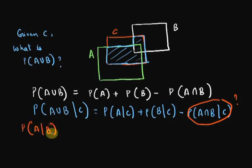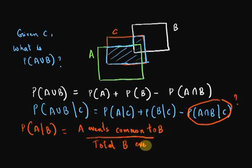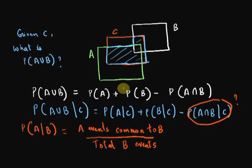Remember conditional probability of A on B is nothing but A events common to B divided by all B events. Applying the same thing for A intersection B, it would be A intersection B events common to C divided by all C events.